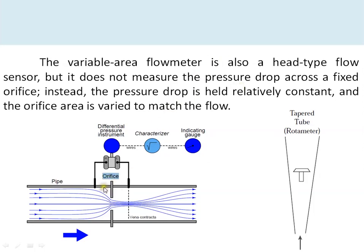The variable area flow meter is also a head type of flow sensor. An orifice is also a head type flow sensor, but in an orifice the restriction is fixed, and an increase in flow rate causes an increase in pressure drop, which is measured by a differential pressure transmitter to give the flow rate. In a rotameter, with an increase in flow rate, the area changes and the pressure drop across the float always remains constant — only the area changes.